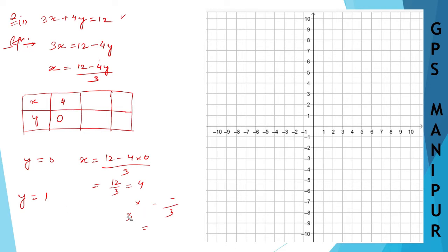Let us try another number, y is equal to 3. So x will be equal to 12 minus 4 into 3 divided by 3. So 12 minus 12 is 0 divided by 3, 0 divided by 3 is 0. So when y is 3, x is equal to 0.